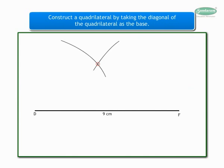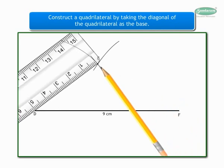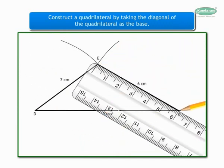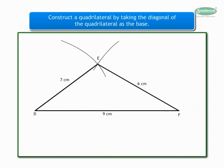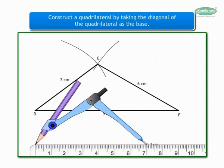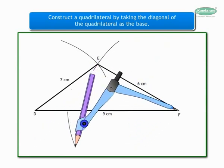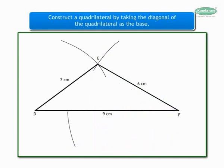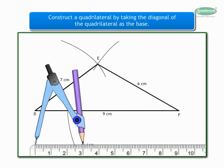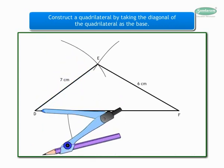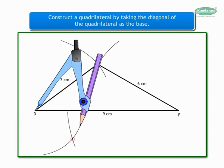Name the point of intersection of the two arcs as E, and join point E to point D and point F. Similarly, as we want the measure of side FG as 7 cm, we will take 7 cm on the compass and draw an arc from point F below the base. And as we want the measure of side DG as 3 cm, we will take 3 cm on the compass and draw another arc below the base from point D intersecting the arc drawn from point F.